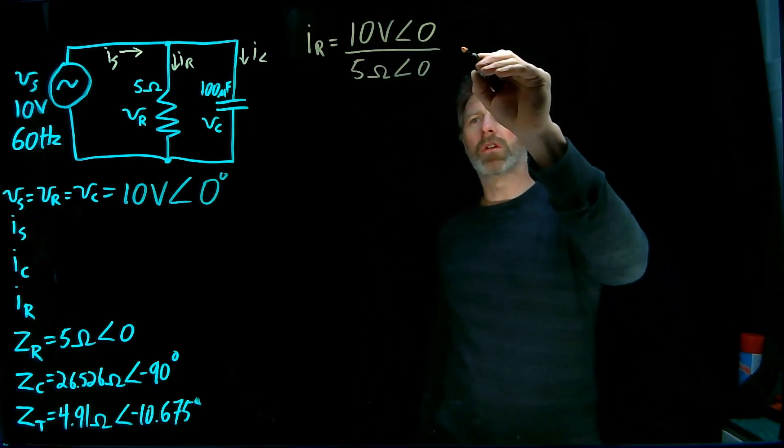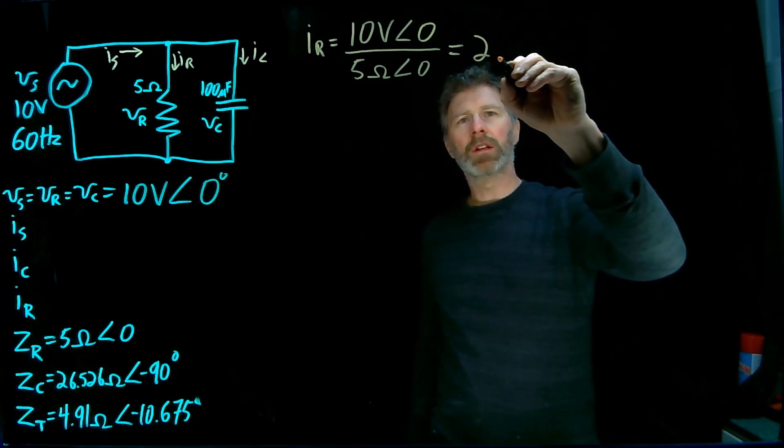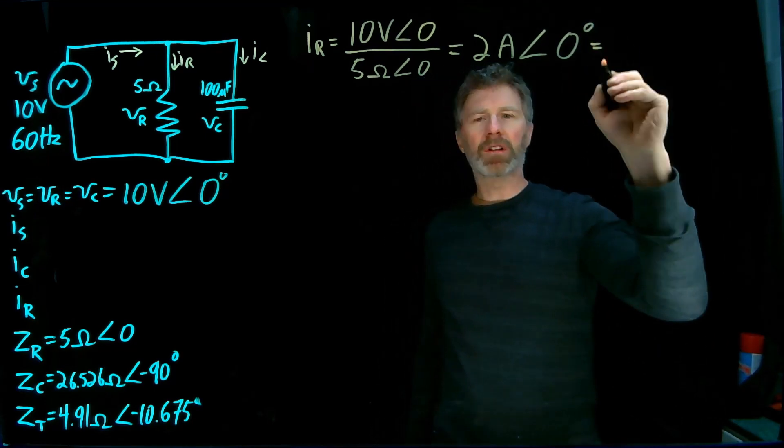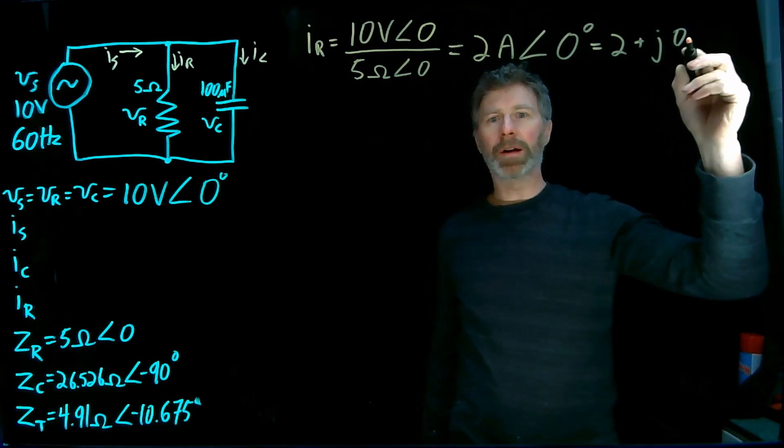So 10 volts, phase angle zero over 5 ohms, also phase angle zero. Gives me a current of 10 amps with a phase angle of zero degrees. Rectangular coordinates, that's an easy conversion, because there's no imaginary part.